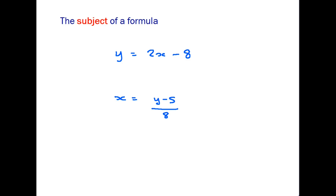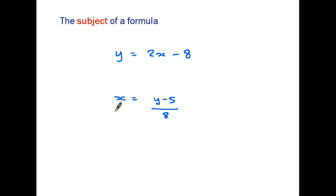The first thing we need to understand is what we mean when we're talking about the subject of a formula. We'll take a look at these two formulas here. The first one: y equals 2x minus 8. This formula is telling us what y is equal to — it's all about y, therefore y is the subject. In the bottom one, x equals y minus 5 over 8 — it's telling us all about x, therefore x is the subject.